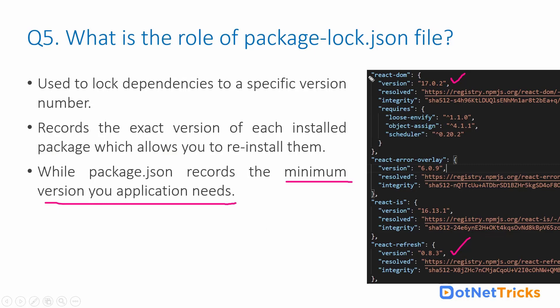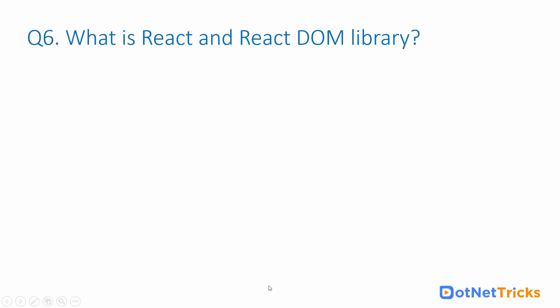If you don't have the package-lock.json file, after two or three years npm might download the latest version of React.js, which might not be compatible with older versions of other libraries. That's why we must have the package-lock.json at the application level — so anytime you configure it, you will have exactly the same packages and settings as when you originally set it up.